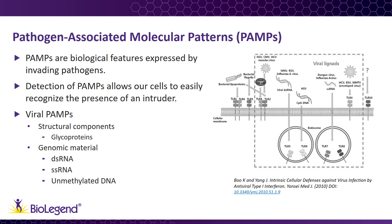Other viruses, like West Nile virus, which causes West Nile fever, and the seasonal flu virus, influenza A, possess single-stranded RNA genomes. These can be detected directly if localized to certain compartments within the cell, or when they form double-stranded RNA intermediates during the replication process.